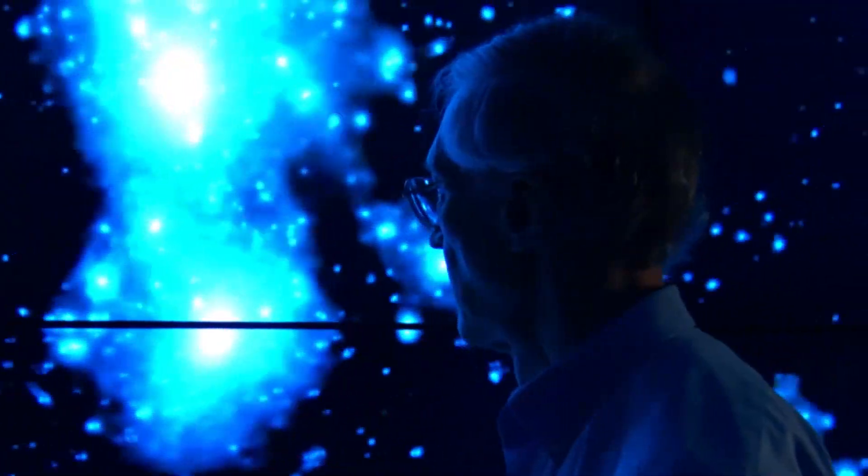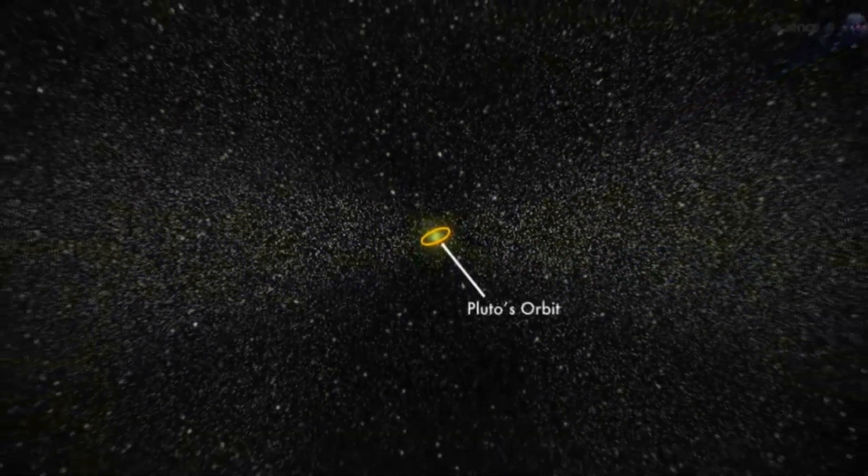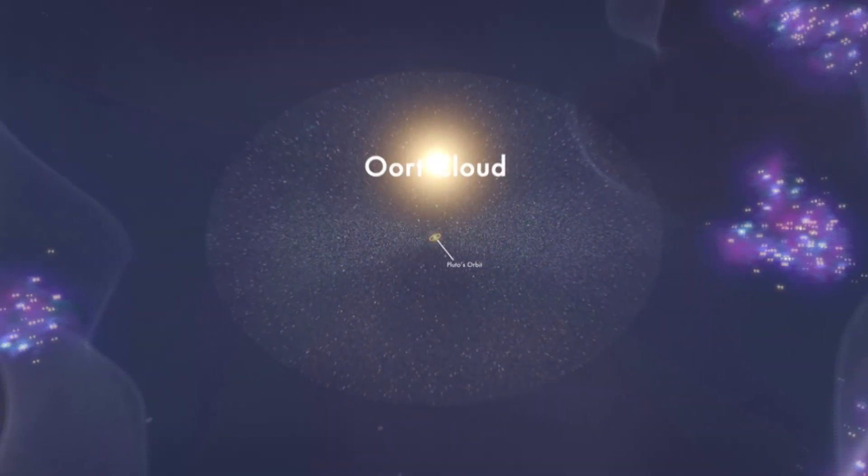However, this is where scientists were taken aback. Our entire solar system, including the far-off Oort Cloud which is a light year away from the Sun, appears to be engulfed in a big bubble.